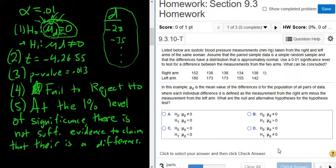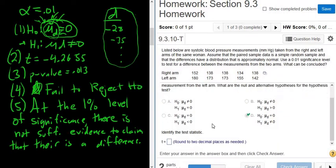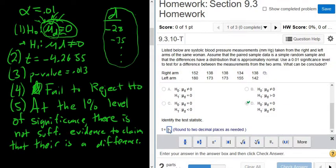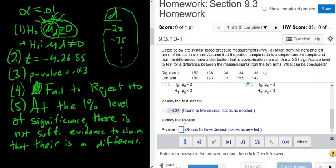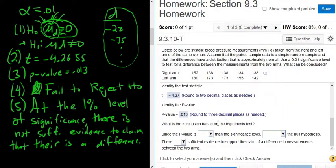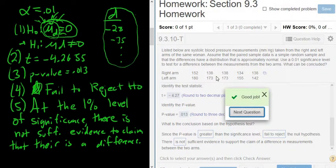So it's going to be this one here, D. The test statistic, they want two decimals. So it's going to be negative 4.27, because the five turns the six into a seven. And the p-value, it wants three decimals. So .013. It's kind of interesting. Ours was already three decimals. Most of the time, it gives us four decimals in StatCrunch. And since the p-value is greater than the significance level, we fail to reject the null hypothesis. There is not sufficient evidence to support the claim of a difference in measurements between the two arms. So that's it. There was no confidence interval and no other follow-up. So a relatively short question.